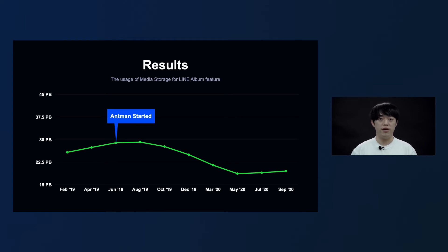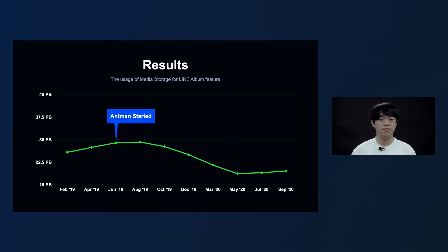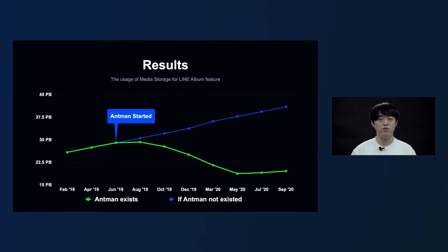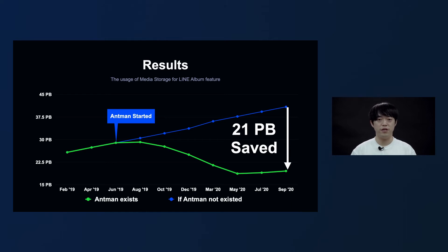So we developed Antman in order to reduce the storage usage. This chart shows the monthly usage of storage used by the album service. You can see that from the beginning of 2019 up to June, before Antman was implemented, storage usage continuously increased. But since June of 2019, after Antman was implemented, storage usage gradually decreased. Without Antman, we believe usage would have continued to increase, indicated by the blue line. As of September 2020, we were able to save approximately 21 petabytes in storage.